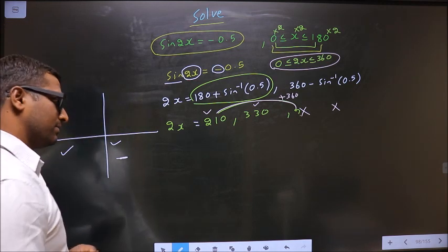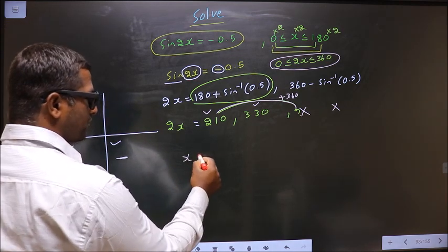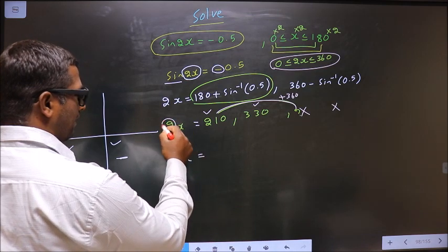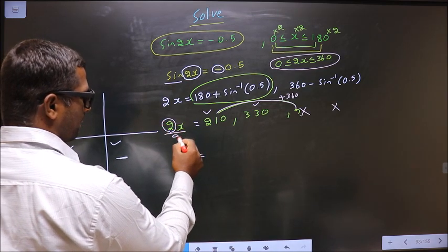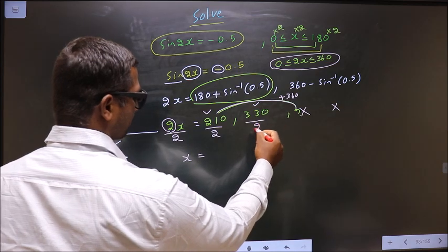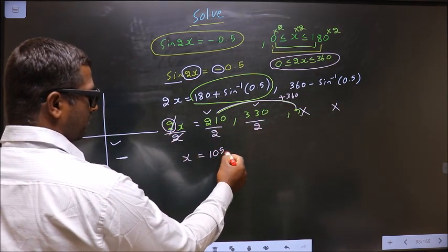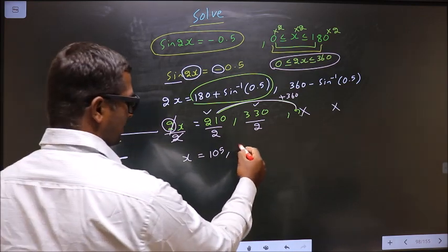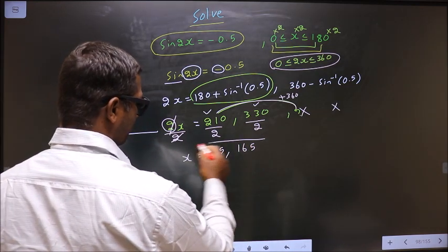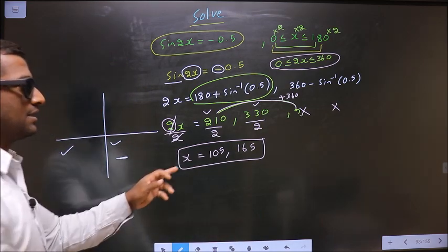Clear? Now, to get the values for x, we have to remove this 2, so you divide by 2. So 210 by 2 is 105, 330 by 2 is 165. So this is our answer.